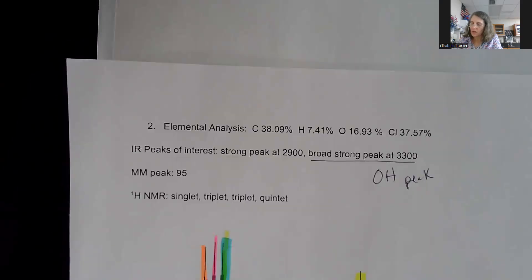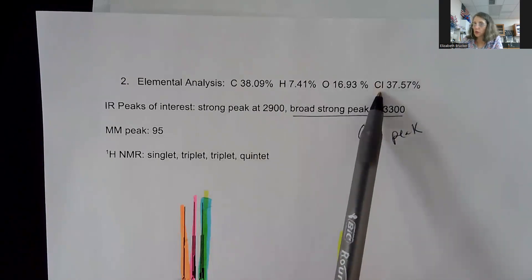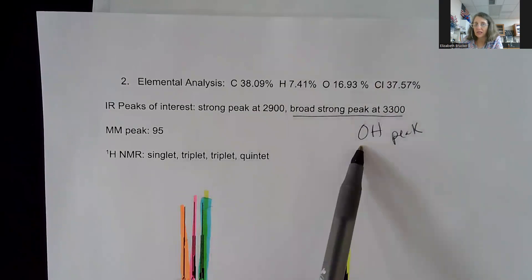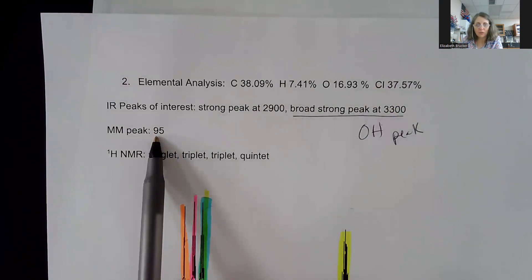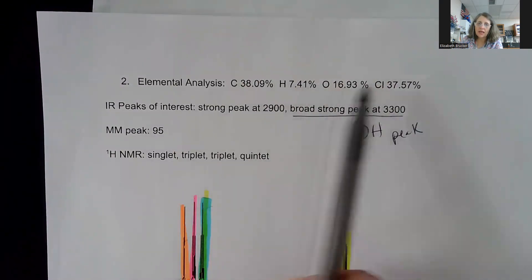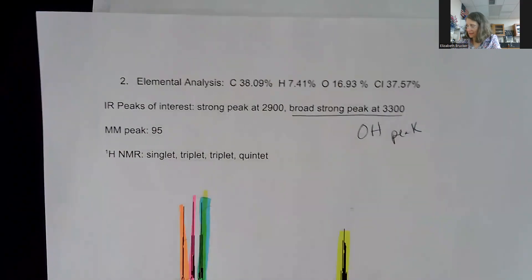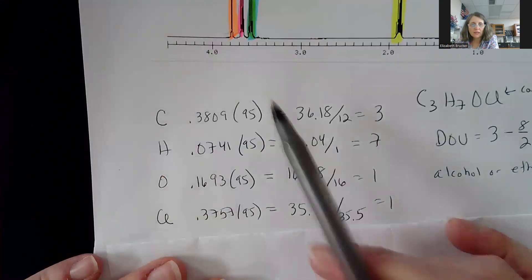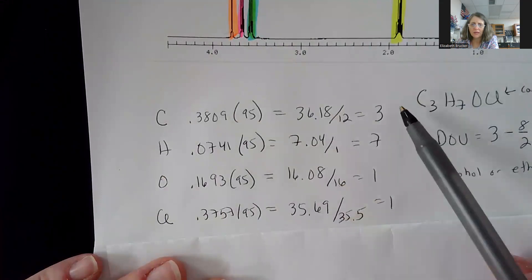Number two. So this one you had to do, I was giving you the percentages, so this would be from a mass spec, and I'm including a chlorine. A chlorine is going to be interesting on this one. IR, strong peak, and then a broad strong peak at 3300 is going to tell you you probably have an OH somewhere in there. And then the molar mass peak is at 95. So your percentages, my way I'm going to show you is I'm going to take the percentage and multiply it by the molar mass peak. So I took my percentage, multiplied it by the 95, and then I divide it by the respective molar mass of the element itself. So 12, 1, 16, and 35.5 is the molar mass of each one of those. So you have a 3, 7, a 1, and a 1.